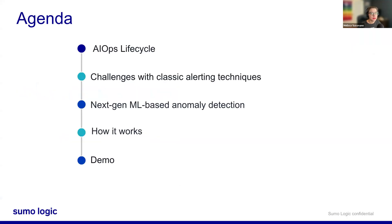Here's what we have on the agenda for today. We're going to go through the AI ops lifecycle, some challenges with classic alerting techniques, and then our next-gen ML-based anomaly detection. Then we'll get into how that actually works, and then we're going to do the demo.